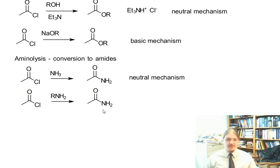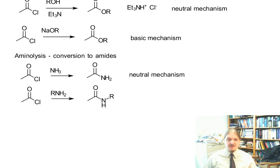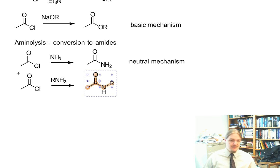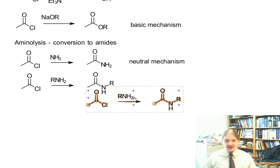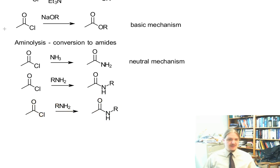If we react with a primary amine, then we get an amide with one alkyl group on it. Also follows the neutral mechanism. If we use a secondary amine, R2NH, we get a tertiary amide.